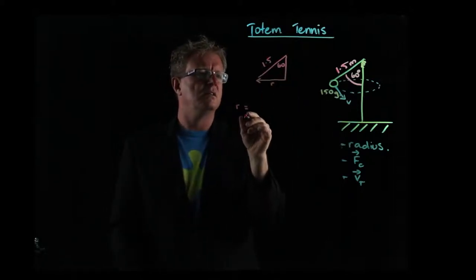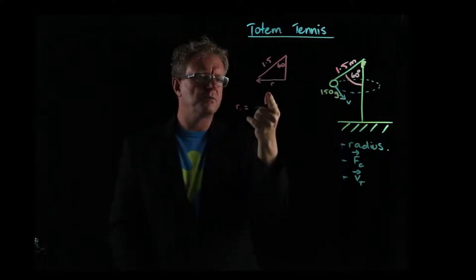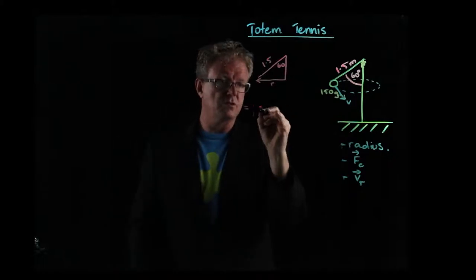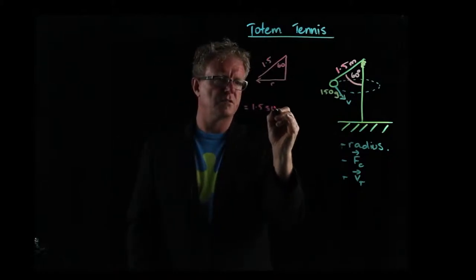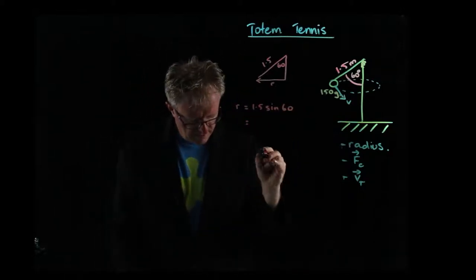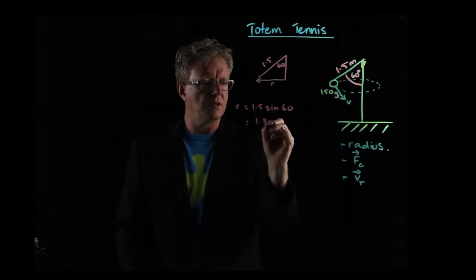So r is equal to opposite over hypotenuse is sine. All right. So we can say r is equal to 1.5 sine 60. And then we do that. We throw that in the calculator and that comes out to be 1.3 meters.